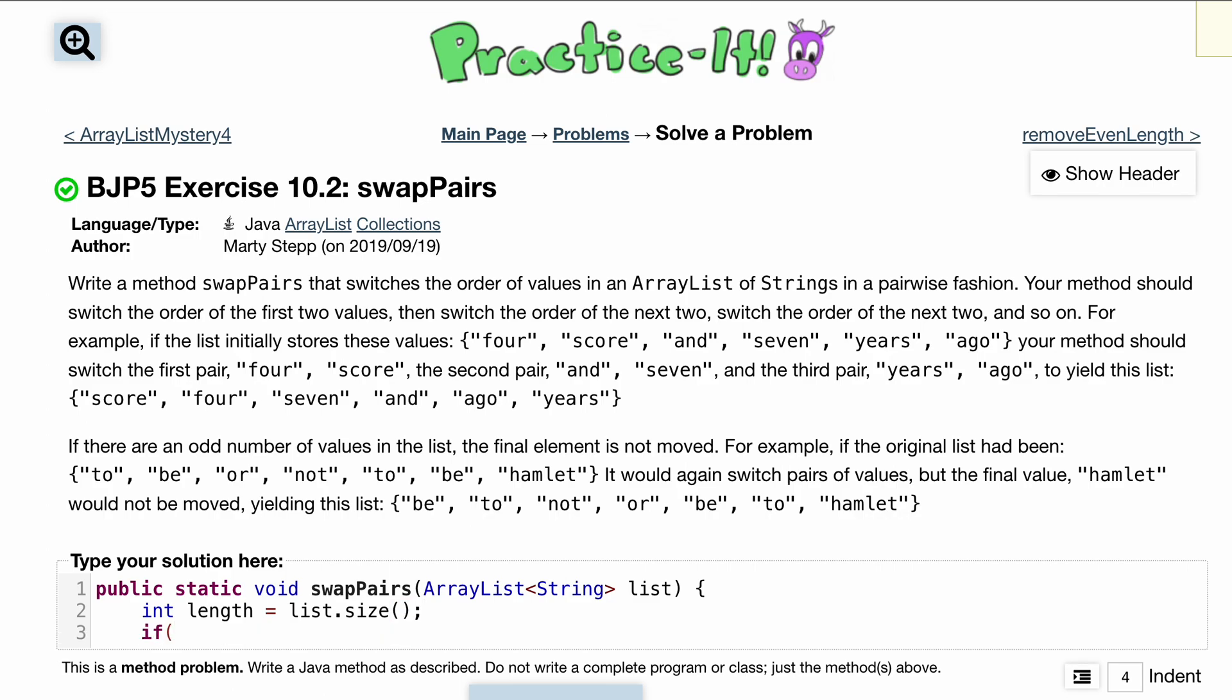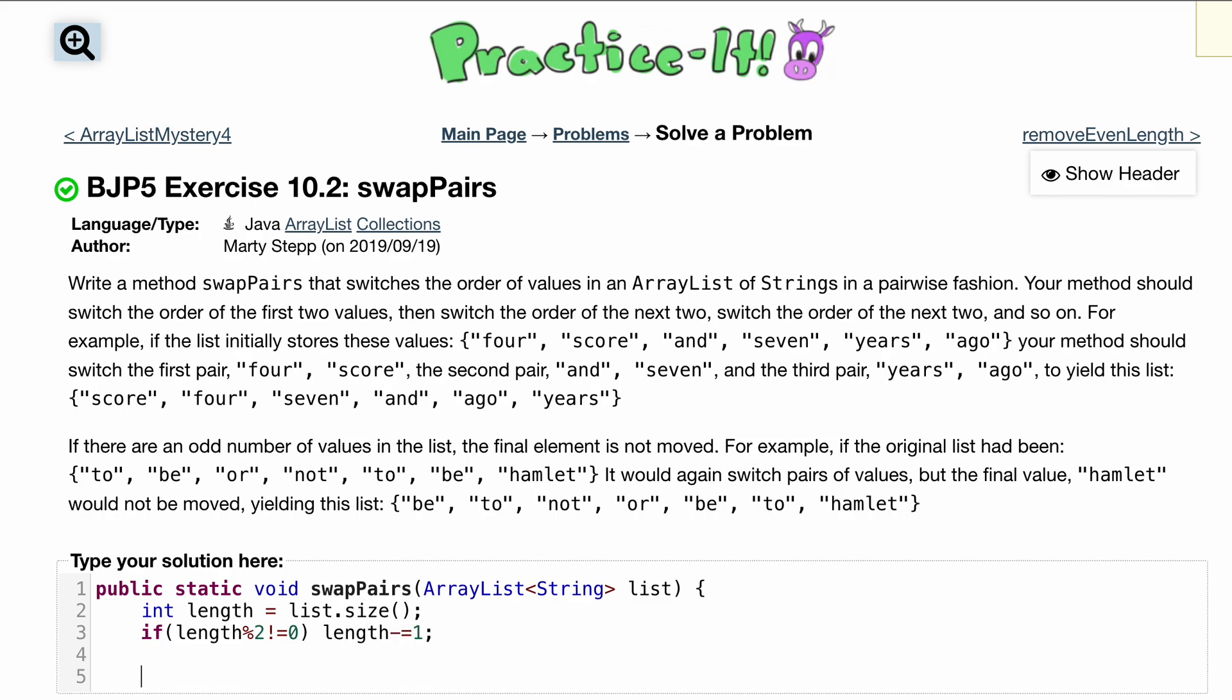Now if it's odd, this is going to check for us. If our length modulus 2 does not equal 0, that means we have some remainder, meaning it's odd, then we'll just do length minus equals 1. So we just take one off the length.